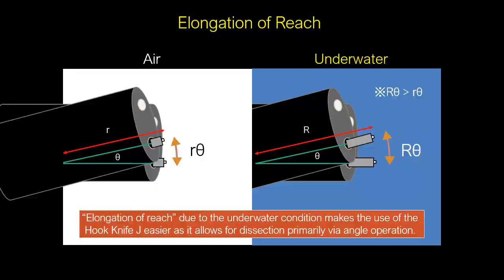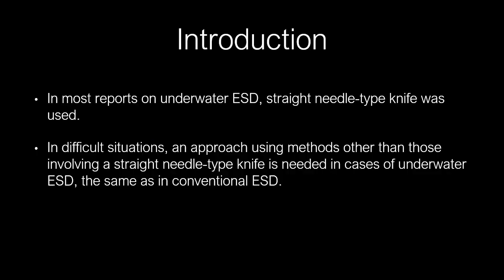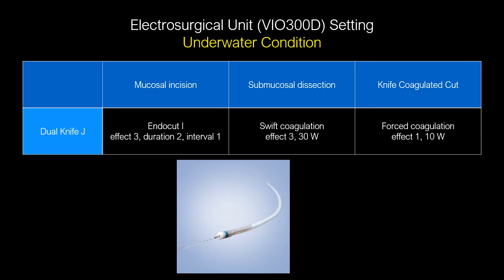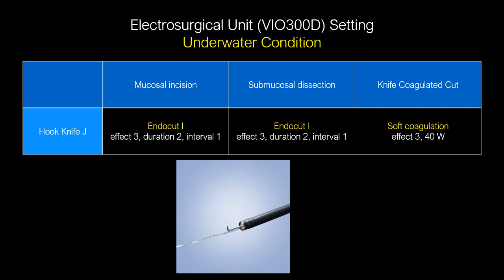In most reports on underwater ESD, a straight needle-type knife was used. However, in difficult situations, an approach using methods other than a straight needle-type knife is needed. In underwater ESD, the same as in conventional ESD, we primarily use the dual knife-J, and in difficult situations, we use the hook knife-J. With the dual knife-J, it is not necessary to change the electrosurgical unit setting for submucosal resection even in saline solution. Using the hook knife-J in saline solution, mucosal resection with the coagulation mode, such as swift or forced coagulation mode, is difficult due to the high electrical conductivity of the saline solution.